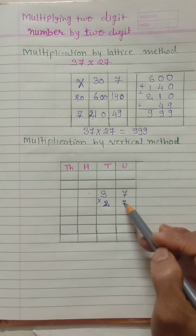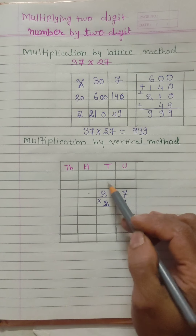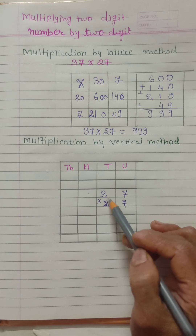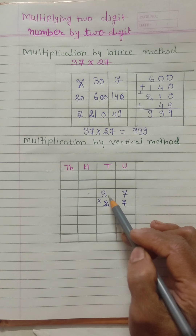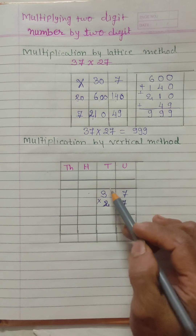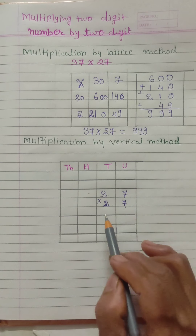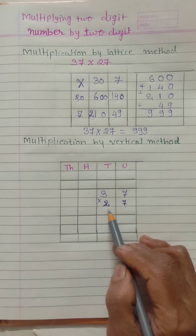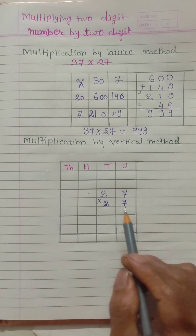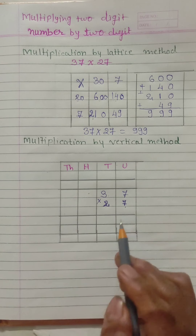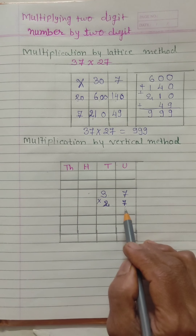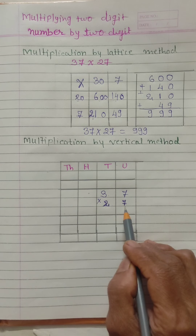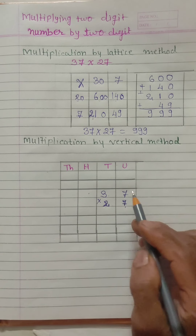In the lattice method we wrote numbers differently, but here we write them in unit and tens places. Here, 3 tens means 30 — we have written 30. And 2 tens means 20. Now we will start our multiplication, and we will always start from the unit place.